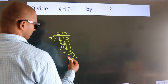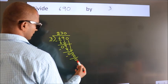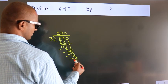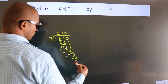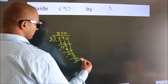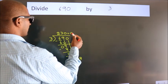After this, no more numbers to bring it down. So, we stop here. This is our remainder. This is our quotient.